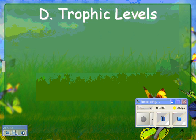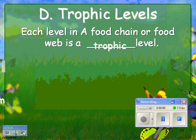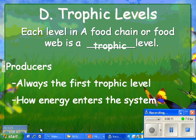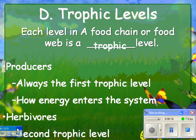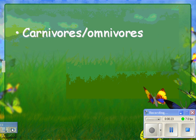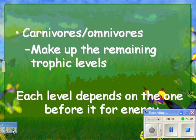We're looking at ecology today, and we're going to talk about trophic levels. Each level in a food chain or food web is called a trophic level. Producers are always the first trophic level, and this is how energy enters the ecosystem. Herbivores — the things that eat producers, like a rabbit or a deer — would be the second trophic level. Carnivores or omnivores would be at the next level, and they make up the remaining trophic levels. Each level depends on the one before it for energy.